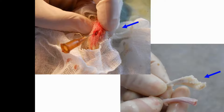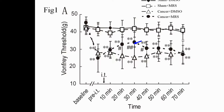By inoculating tumor cells into the left tibia of an SD rat, we established the bone cancer pain model. We managed to block activation of the spinal P2Y12 receptor through intrathecal administration of its selective antagonist. Our data was presented in this chart.